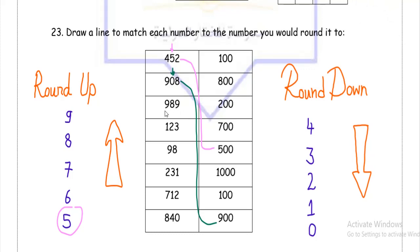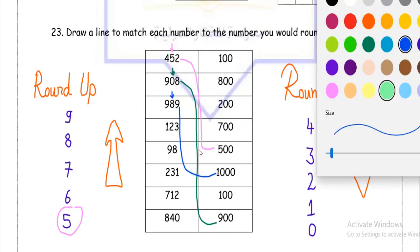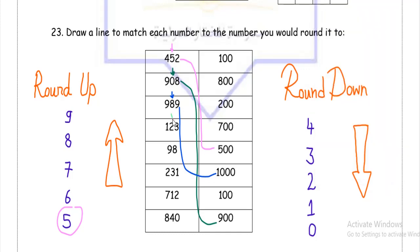Next, I've got 989. Look at the tens — 8 rounds up. So I'm going to round 989 to 1,000, because the next number in the hundreds is 10, so it becomes 1,000. Next, 123 — I've got 2 in the tens, and 2 rounds down. So 123 is going to become 100.